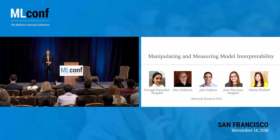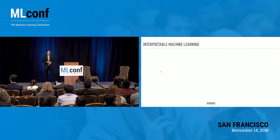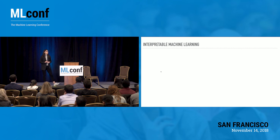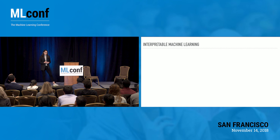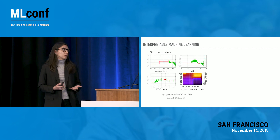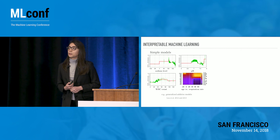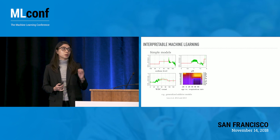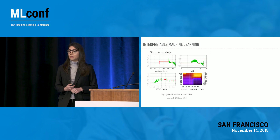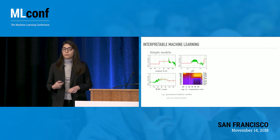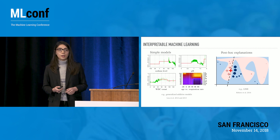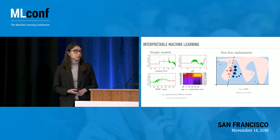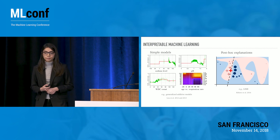Interpretability has gained a lot of interest recently. When I look at the landscape of research on interpretable machine learning, I usually think about it falling into two separate categories. The first is where people try to design models that are intrinsically simple — decision trees or sparse linear models — where you can see the effect of each input feature on the prediction. The second focuses on coming up with post hoc explanations or visualizations for potentially complex models.